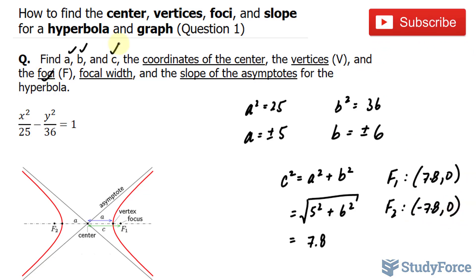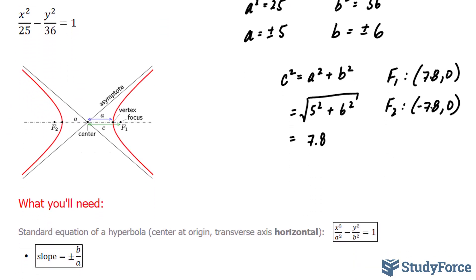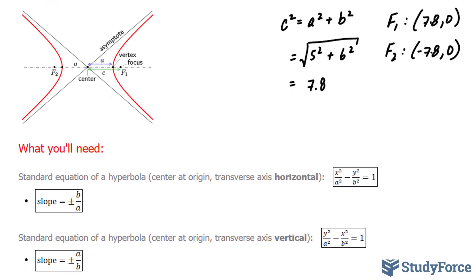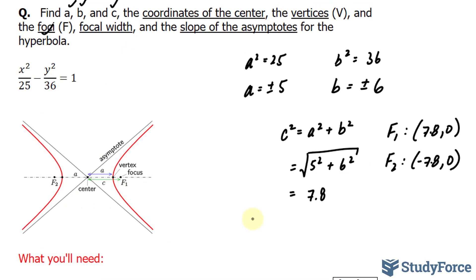The coordinates of the center will represent 0 and 0 because the equation fits the standard form equation of a hyperbola that is centered at 0 and 0. Take a look at the standard equation of a hyperbola. Notice that when you don't have anything being added or subtracted to the x's, then it's centered at the origin. So the coordinates of the center is at 0 and 0.